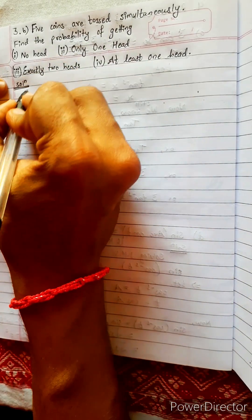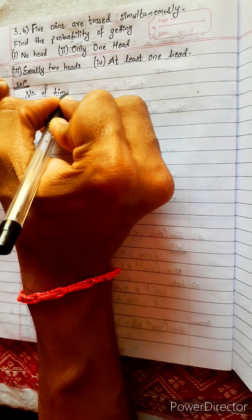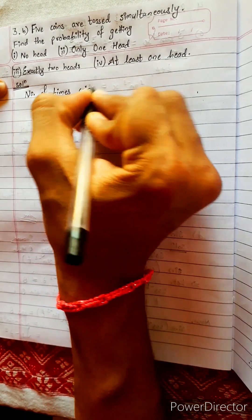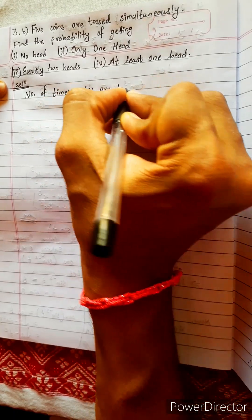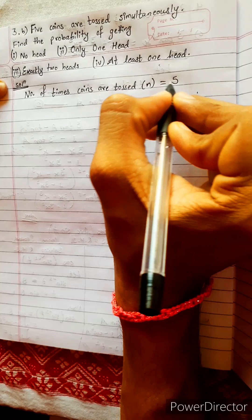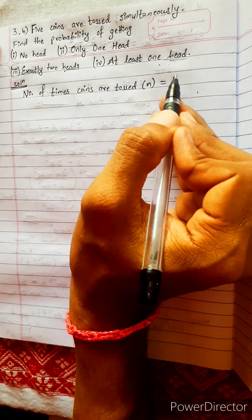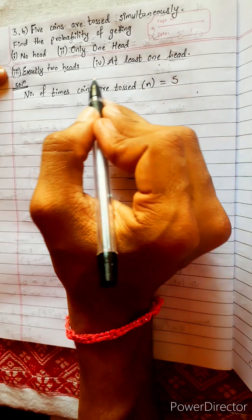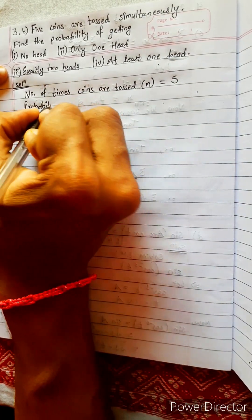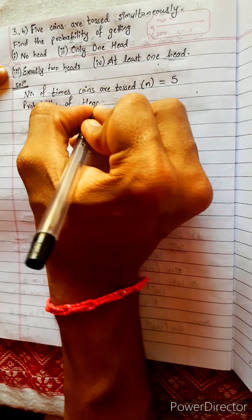Five coins are tossed simultaneously. The number of times the experiment is repeated — or the number of times coins are tossed — is represented by n, and n equals 5. The probability of getting all heads is what we need to find. Our success is defined as head and failure as tail.